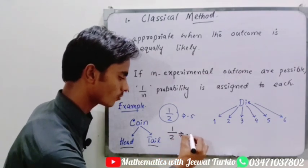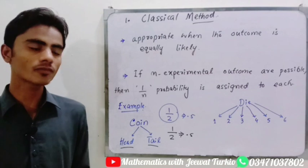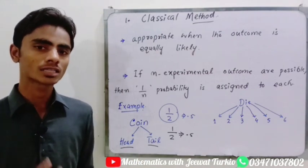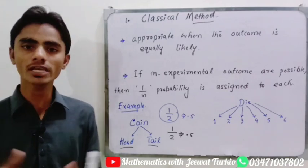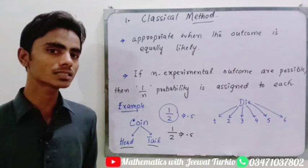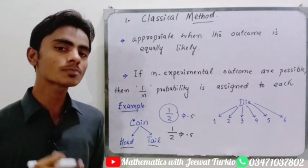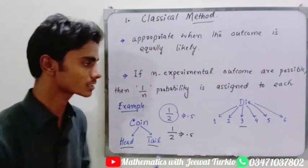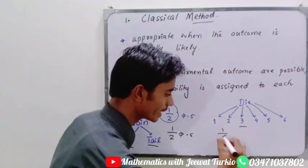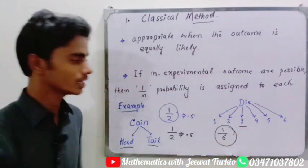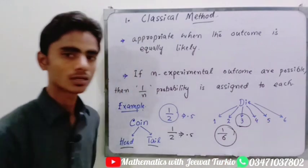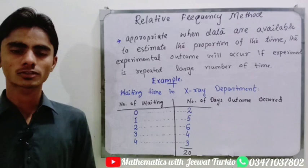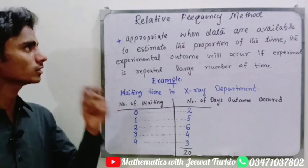In the same way, if the possible outcomes are six and all outcomes are equally likely — for example, rolling a dice — and we are asked what is the probability that rolling a dice results in three, then since three is one of six equally likely outcomes, the probability assigned to this outcome is one by six.